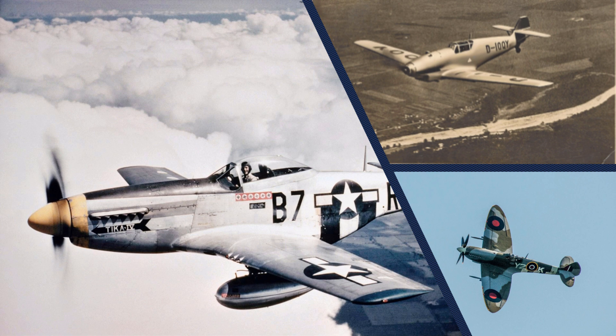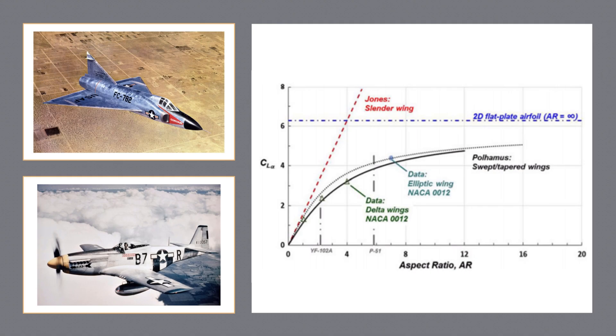The aerodynamics of vortex flows originates from the development of high-speed military aircraft following the Second World War. Before this, aircraft such as the P-51 Mustang, Supermarine Spitfire, and Messerschmitt Bf 109 were the state of the art. These subsonic, unswept, tapered wing aircraft would soon be replaced by a new generation of supersonic delta wing jets. Among the advances that took place during this time, one notable one was the adoption of thin, highly swept delta wings.